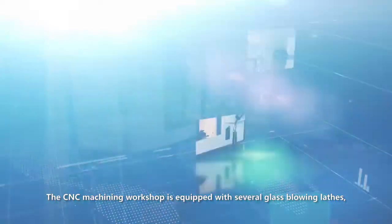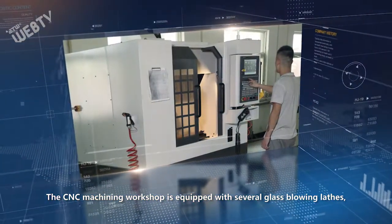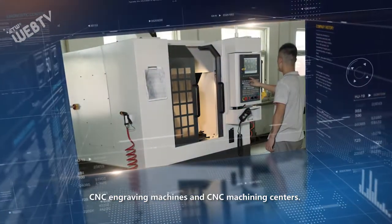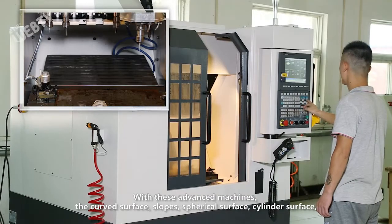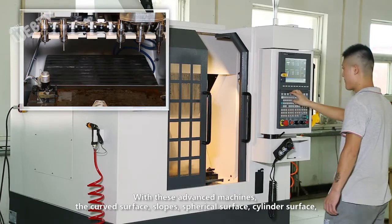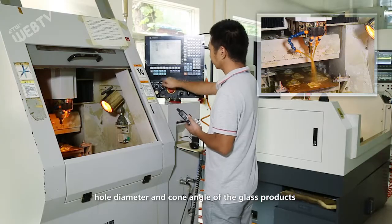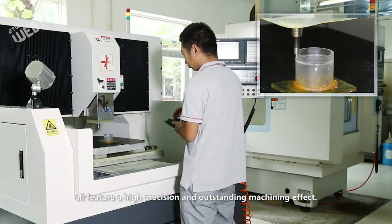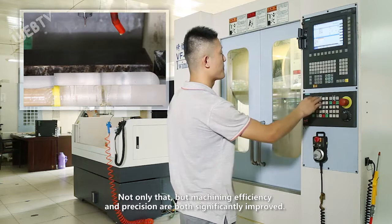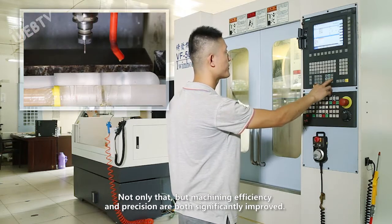The CNC machining workshop is equipped with several glass blowing lathes, CNC engraving machines, and CNC machining centers. With these advanced machines, the curved surface, slopes, spherical surface, cylinder surface, hole diameter, and cone angle of the glass products all feature high precision and outstanding machining effect. Machining efficiency and precision are both significantly improved.